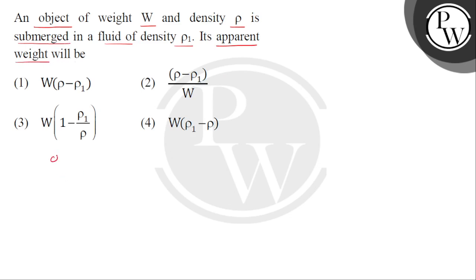Question में बताया हुआ है हमें — एक object है, इसका weight है w. So w को हम express कर सकते हैं as the product of its mass and acceleration due to gravity.